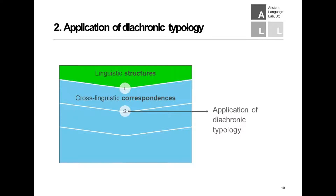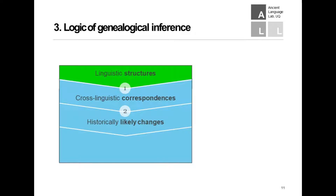Step two is the application of diachronic typology — four little words which contain rather a lot of interesting stuff. This is really the intellectual heavy lifting. It relies on all of what we know about what is more or less likely to occur during language change. The result of applying diachronic typology is that we generate a whole host of hypotheses about historically more or less likely changes. We may not write them all down, but we do entertain them, and how we evaluate their likelihood is all based on diachronic typology.